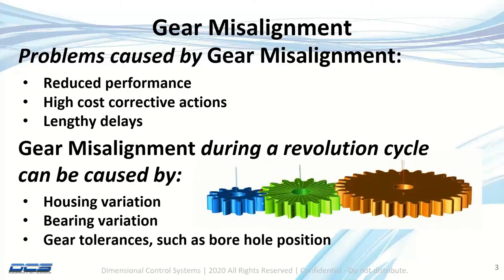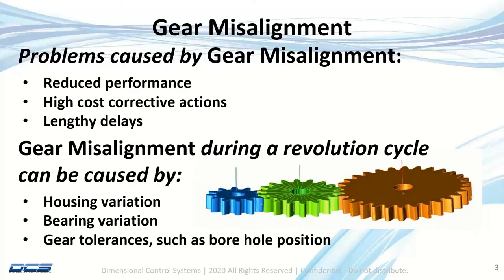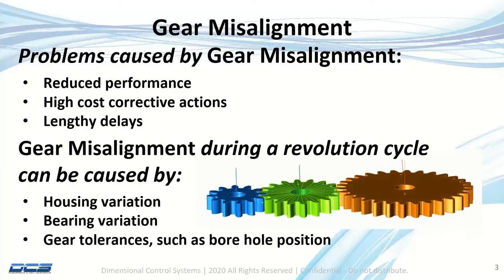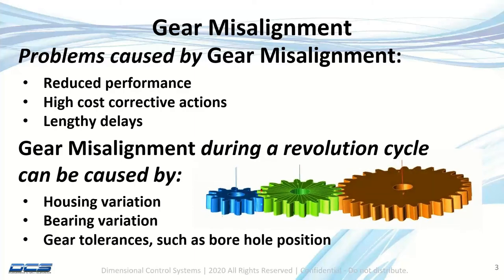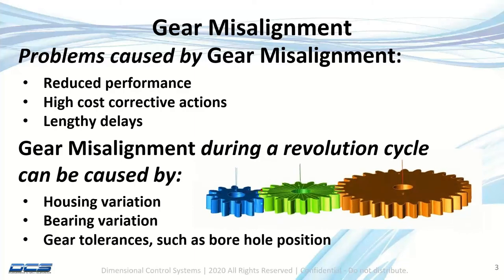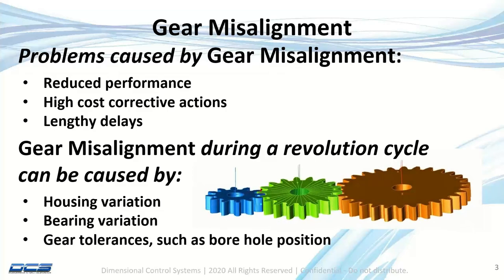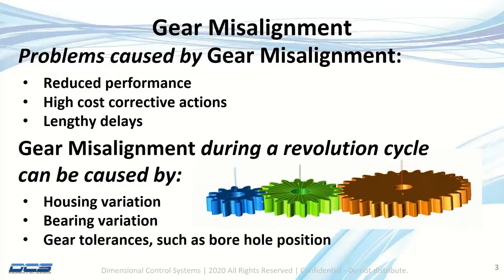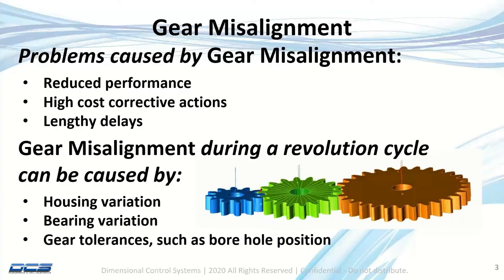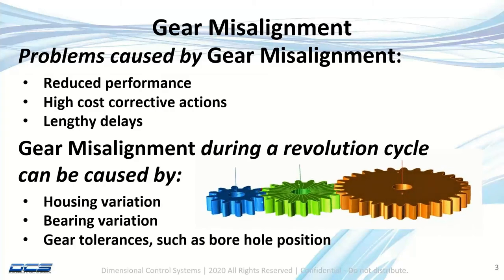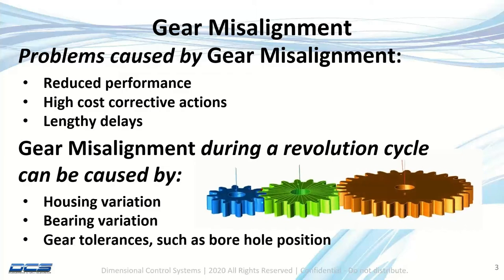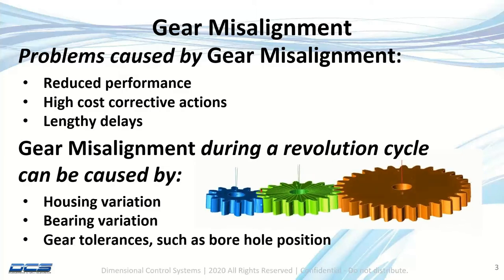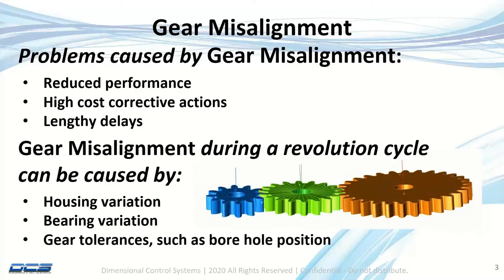Understanding and correcting misalignment before the start of production is one of the keys to getting gear systems working right straight off the bat. One of the issues is acceleration line, or transmission error. The cause of transmission error is the teeth: as they spin around, they load up on the gear, causing a deceleration, then they come into contact with the gear and then unload it, which creates another big acceleration.